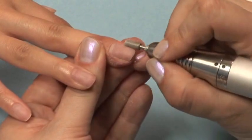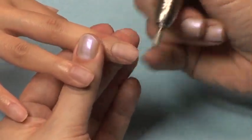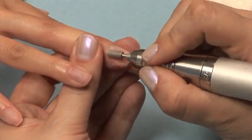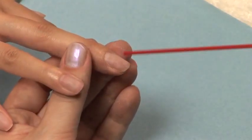Lightly file over the surface of the entire nail to remove the natural shine. Remove all dust from the nails. This dust contains contaminants that can cause lifting.